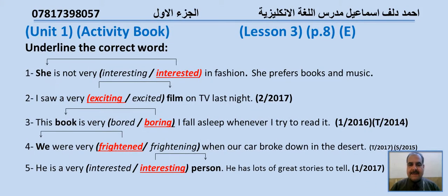Unit one, activity book, lesson three, page eight, exercise E. الوحدة الأولى، كتاب النشاط، الدرس الثالث، الصفحة الثامنة، تمرين حرف E. عنوان السؤال: Underline the correct word. Number one: She is not very interesting/interested in fashion, she prefers books and music. الاختيار الصحيح: interested اسم المفعول، لأنه يصف شخصاً. صارت الجملة: She is not very interested in fashion.